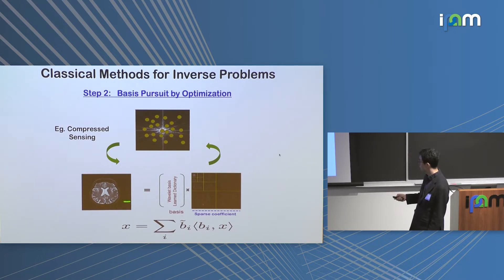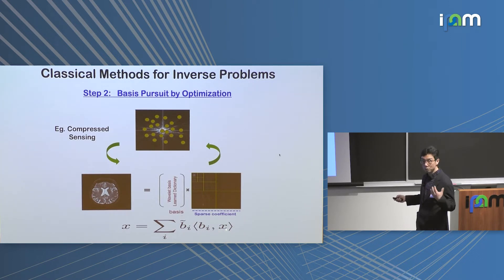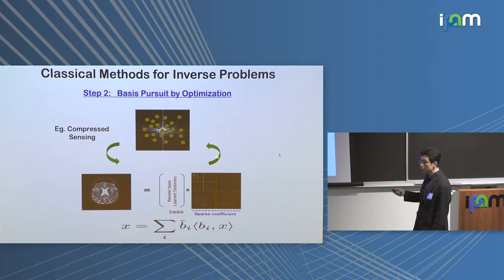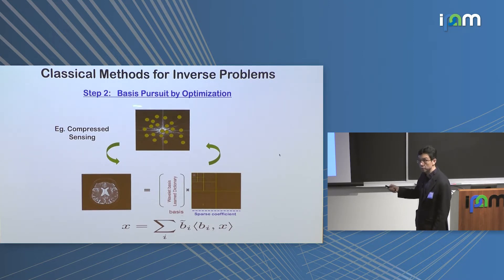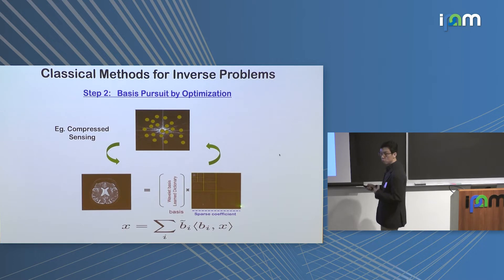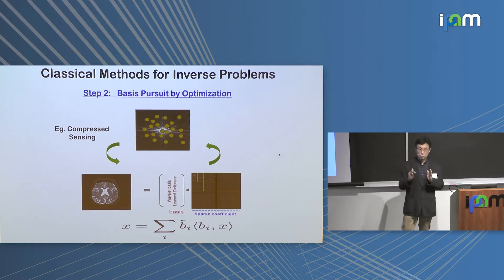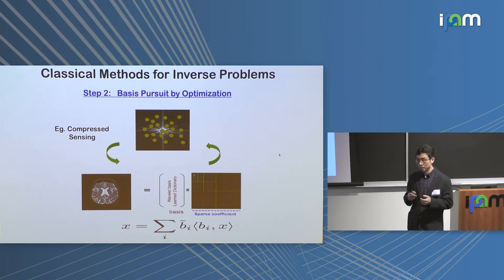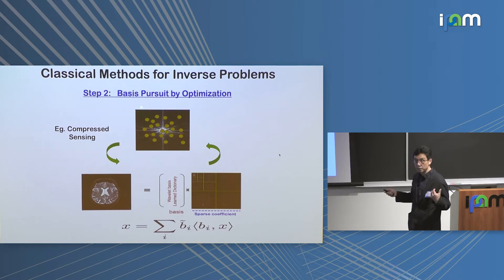Only a small set of coefficients is important, and the others are very negligible. For example, in the wavelet transform of brain images, only a small set of coefficients is non-zero, but we don't know their locations. To find those locations, you fit to a data fidelity term and impose sparsity. By solving this optimization problem, you find the location of the non-zero coefficients and the basis representation — this is the main idea of basis pursuit in compressed sensing.